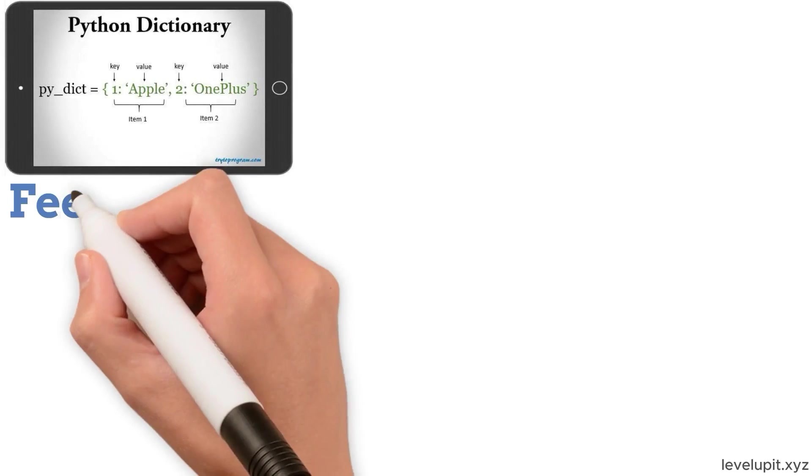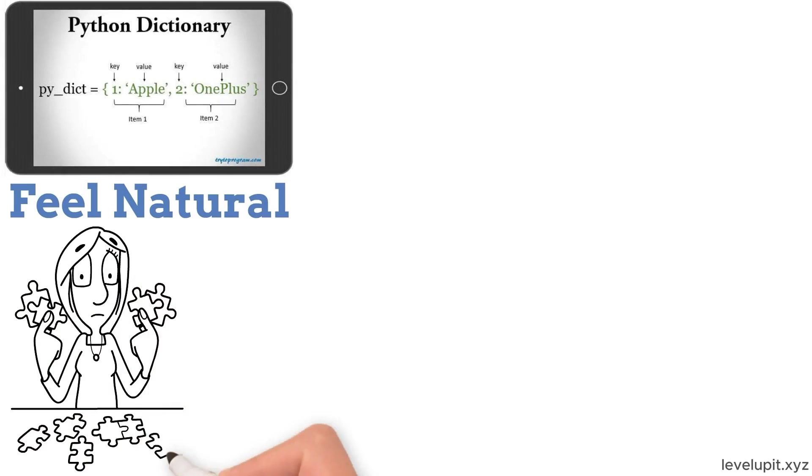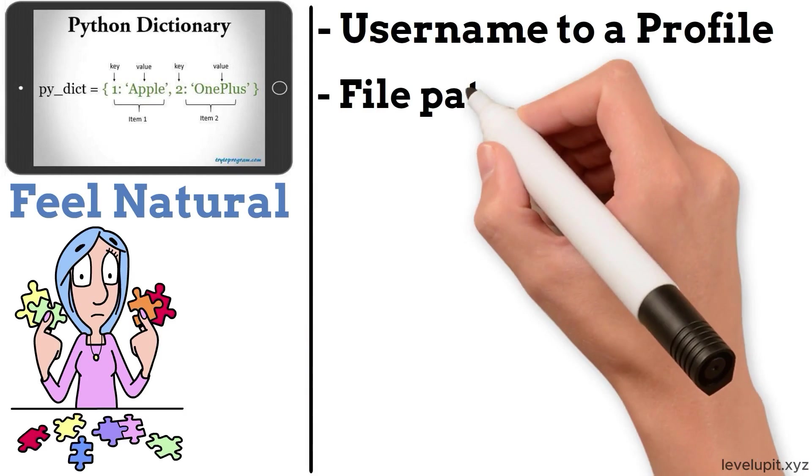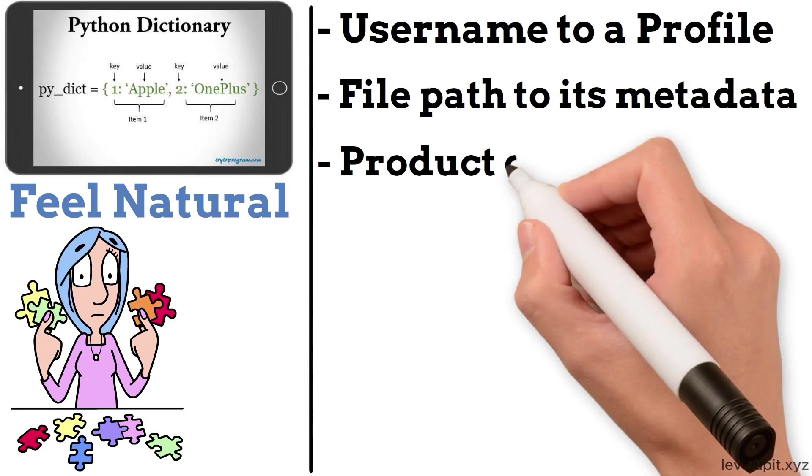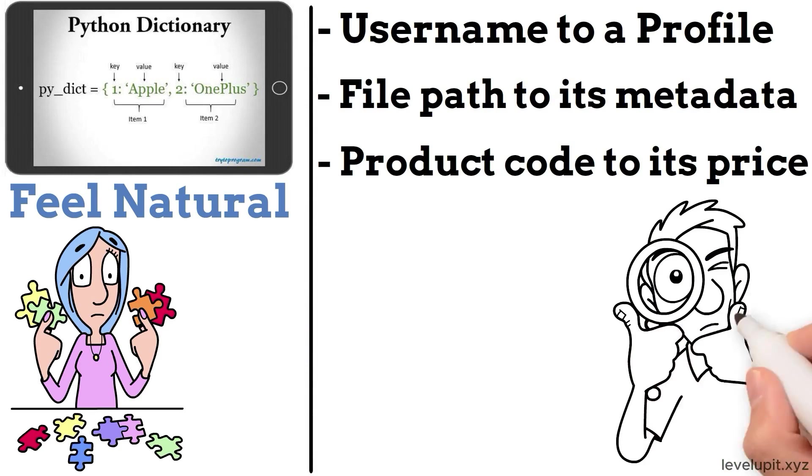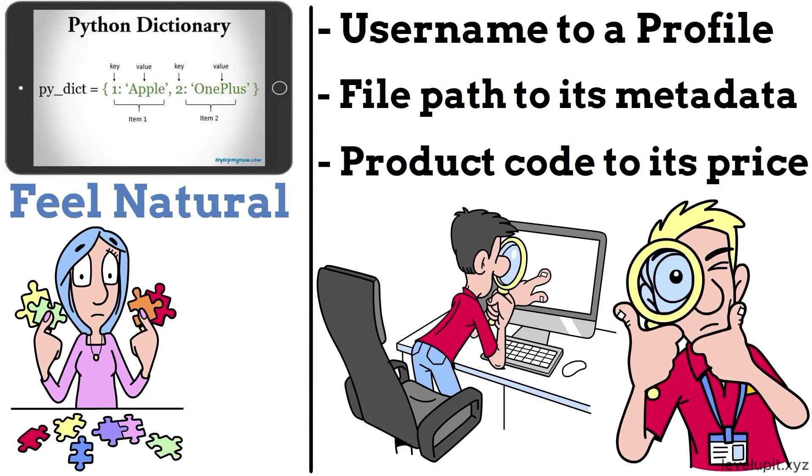Dictionaries map names to values. They feel natural because many problems are exactly that: connect a key to a value. A dictionary can map a username to a profile, a file path to its metadata, or a product code to its price. Looking up a value by key is fast. Adding or updating a value is straightforward.